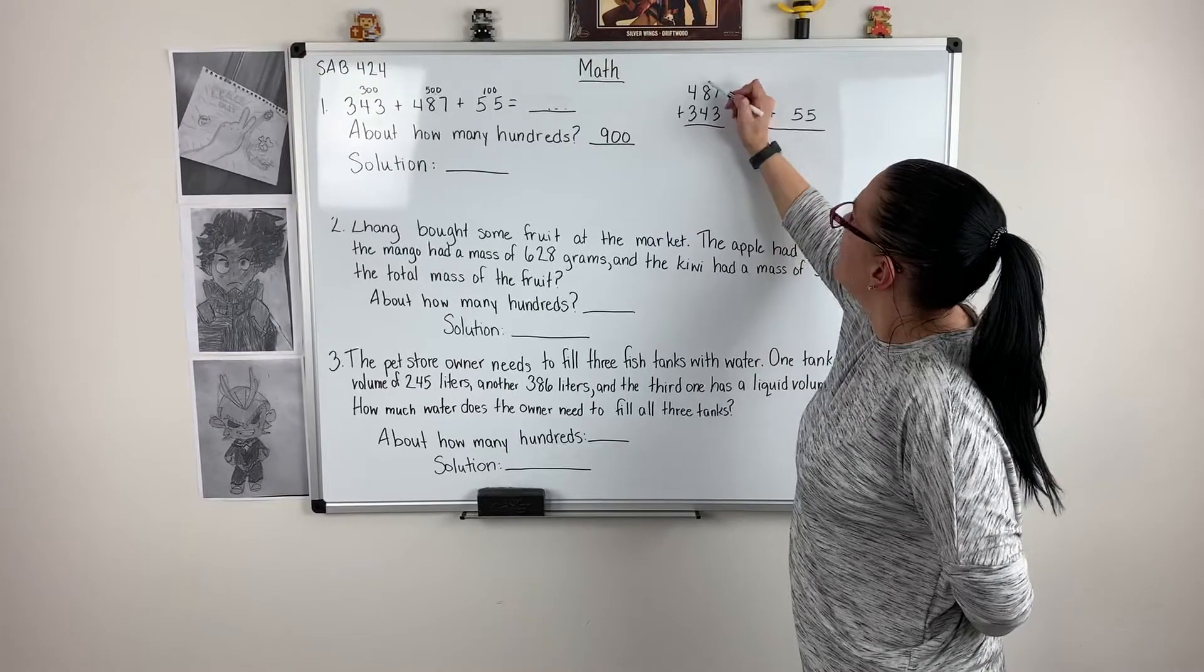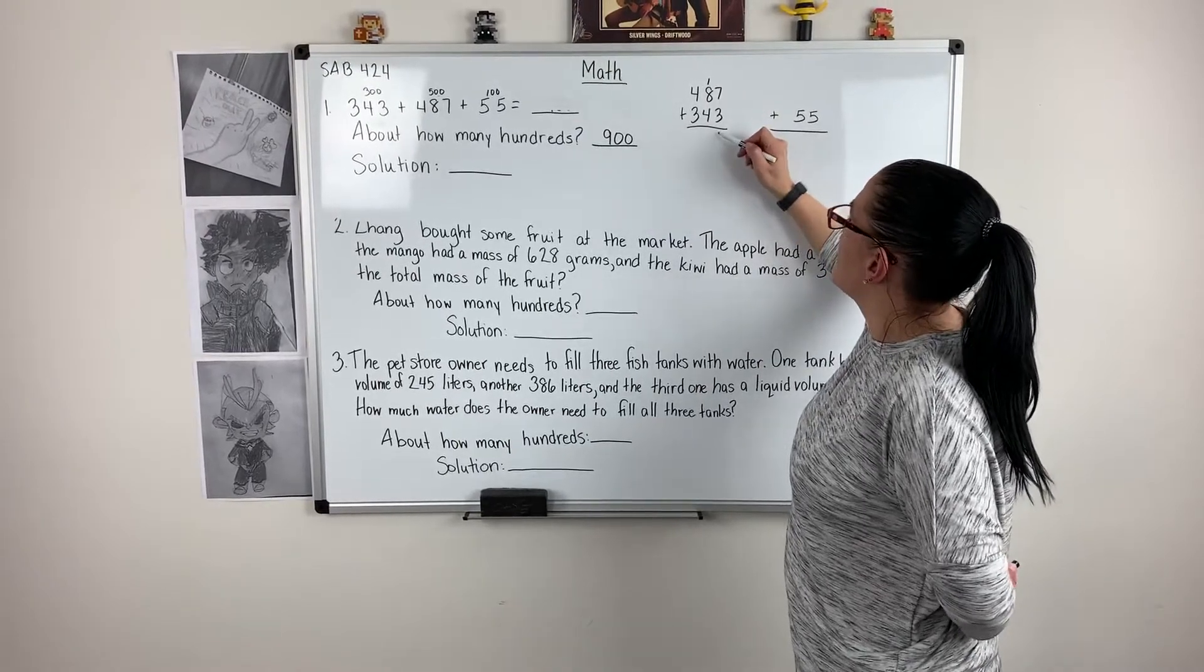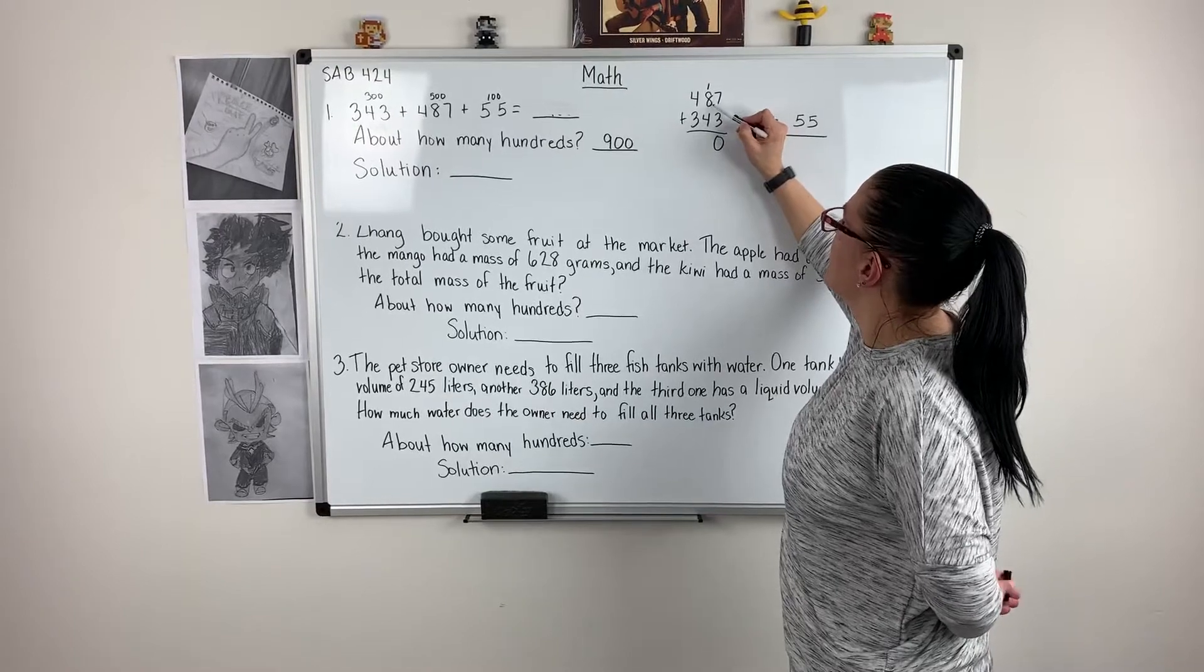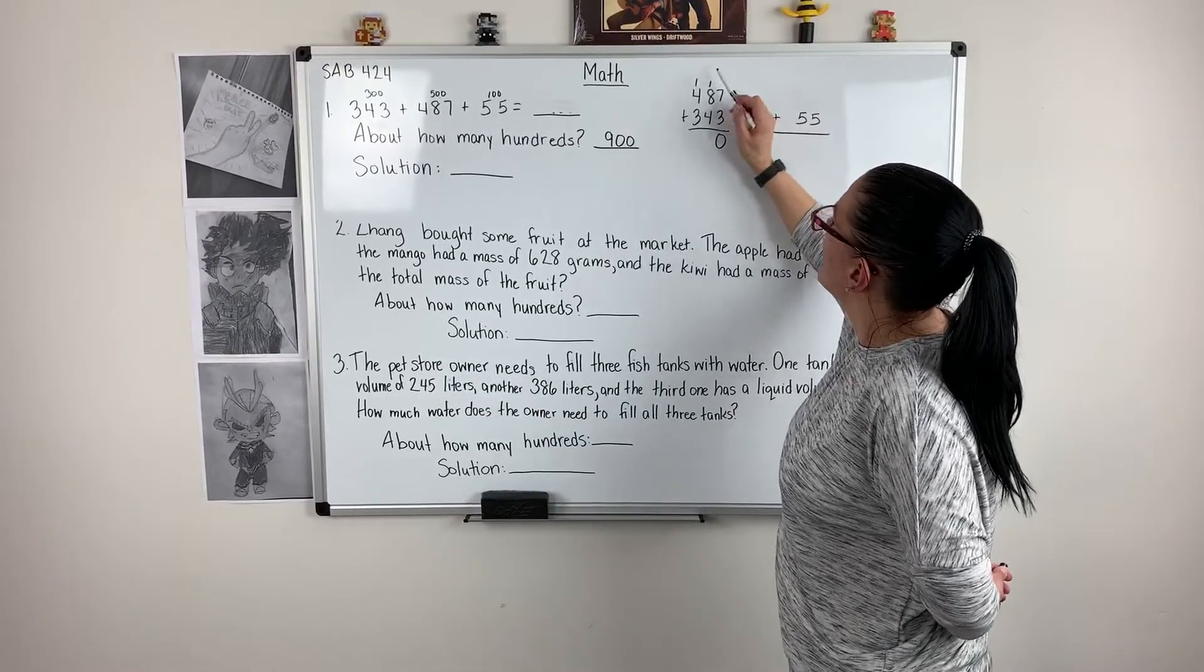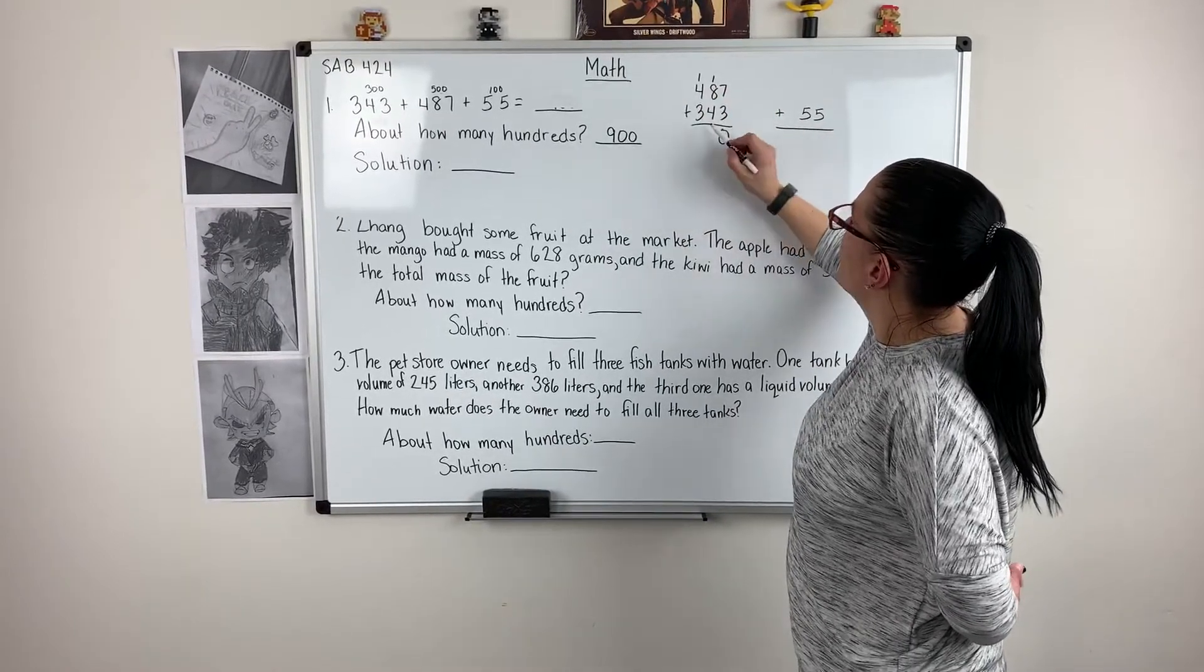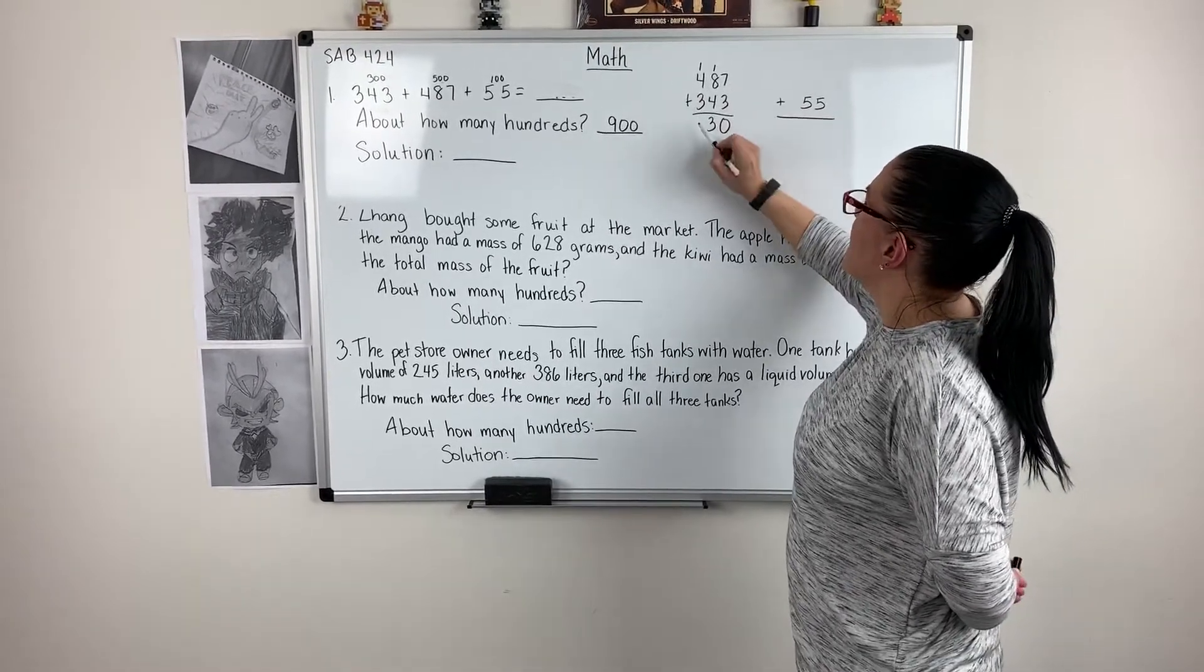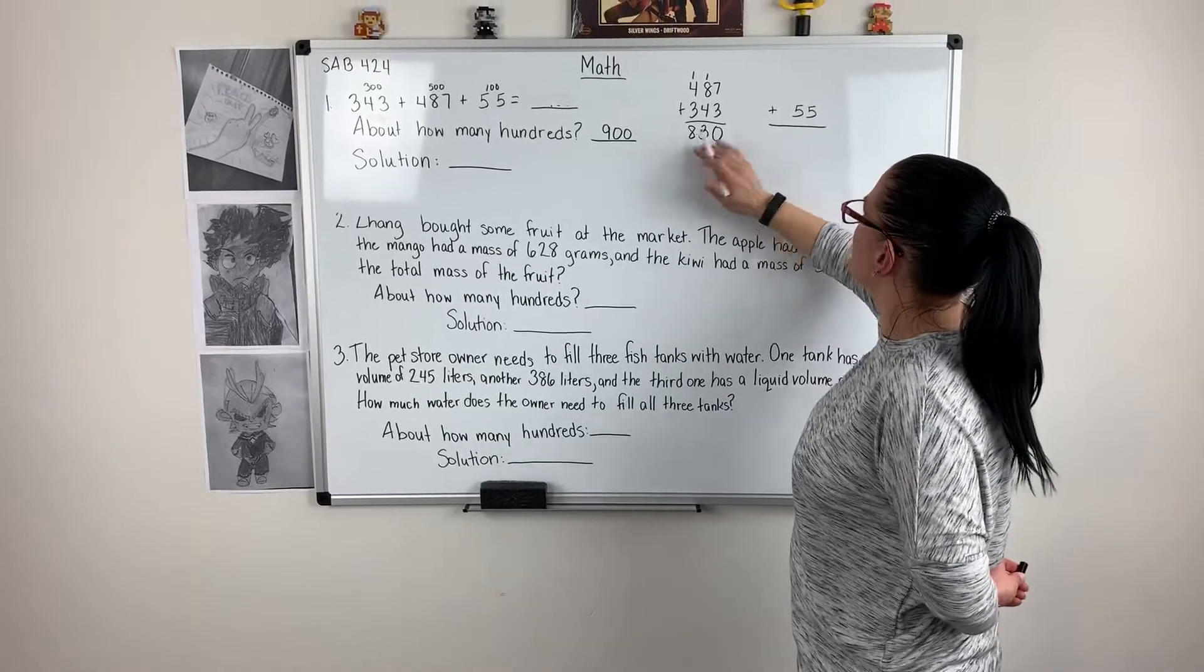7 plus 3 is 10. I need to put my 10 in my tens place. Zero ones, 1 is left over. 1 plus 8 is 9. 9 plus 4 is 13, which means I have 1 hundred, 3 tens left over. 1 plus 4 is 5. 5 plus 3 is 8. So that's 830.